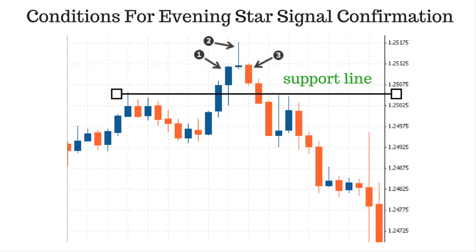Conditions for Evening Star signal confirmation. First condition: it should be formed after an uptrend. Second condition: the first candle should be a large bullish candle, the second either a small bullish or bearish candle, and the third candle should be a large bearish candle. Third condition: after Evening Star formation, traders should wait for the stock to break the nearest support level — once it breaks the support level, then go for short.